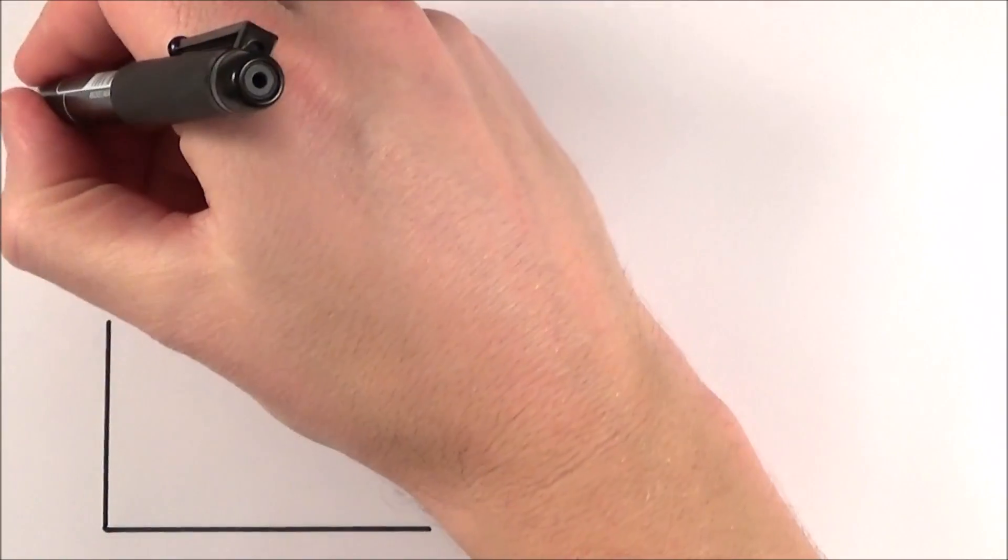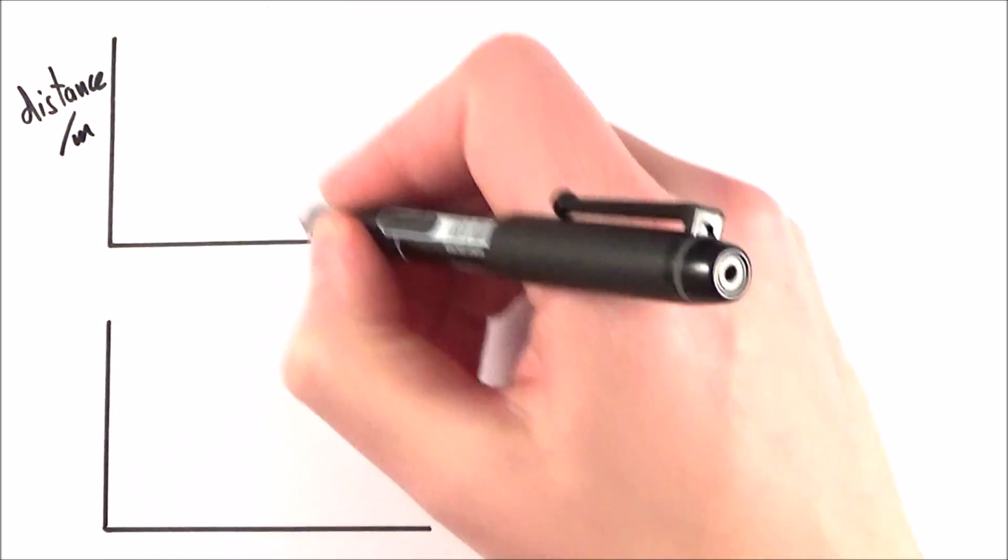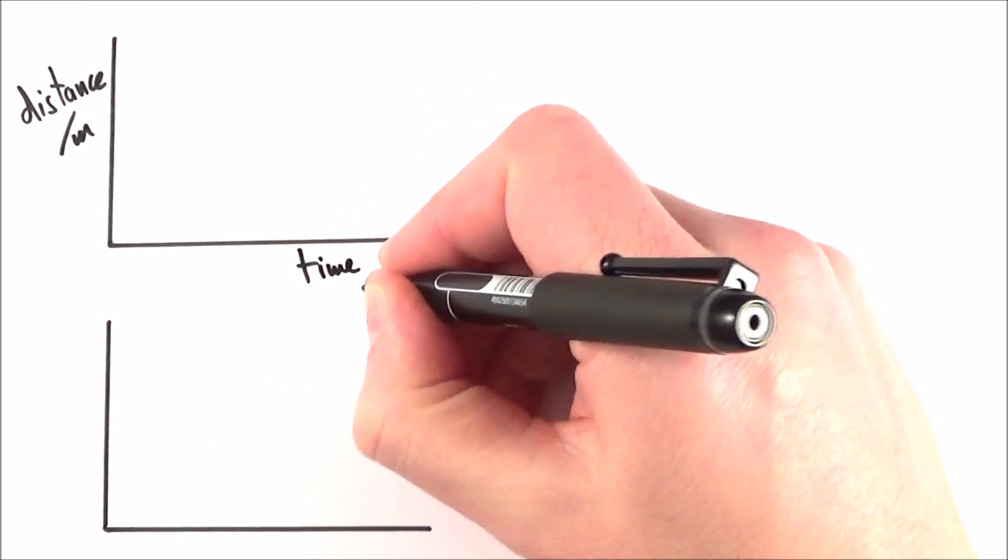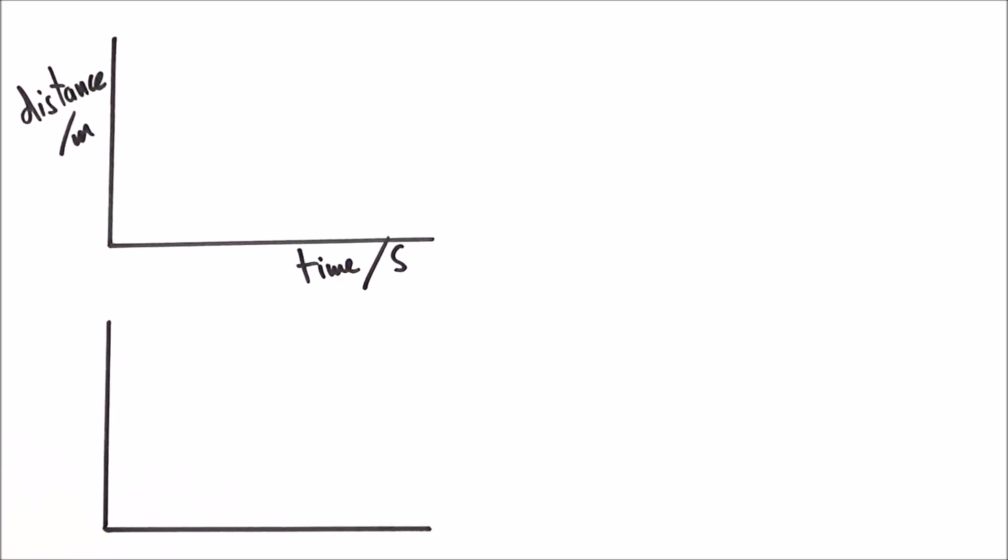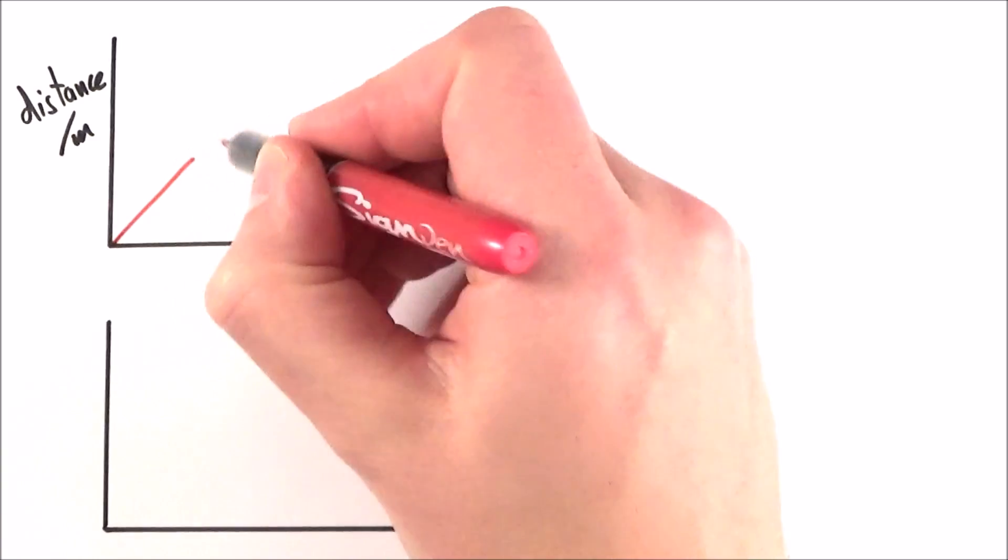To represent this motion we can think about two main sorts of graphs. We have a distance-time graph, so the distance measured in meters and the time measured in seconds, and this basically shows how an object varies its distance with respect to time.